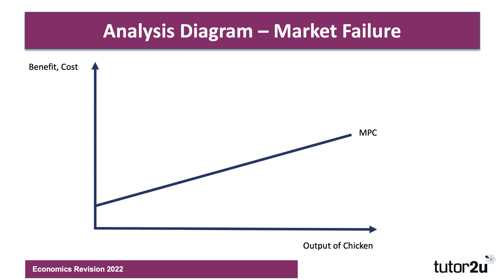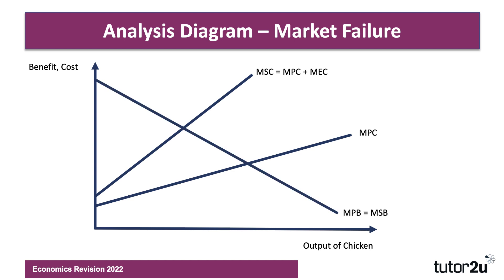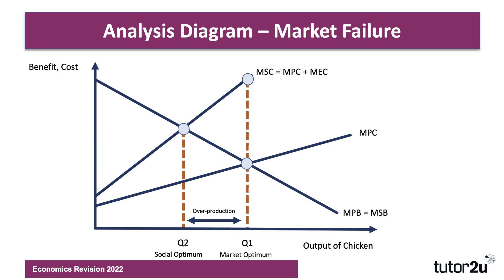Let me work through the analysis diagram of market failure. Here's the output of chicken — marginal private cost is the cost to the chicken farmers. There's a negative externality in production, so MSC equals MPC plus marginal external cost (MEC). That shifts the demand curve — I'm assuming no externality from consumption as a simplifying assumption. The free market equilibrium is Q1, but at Q1 there is an external cost equal to that vertical distance. The social optimum is Q2 — if we took into account the negative externalities from production, we'd have a lower output and a higher price. The overproduction is the market failure.